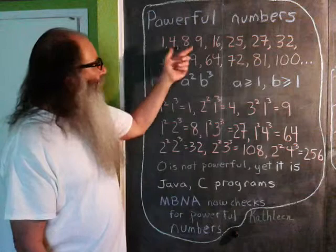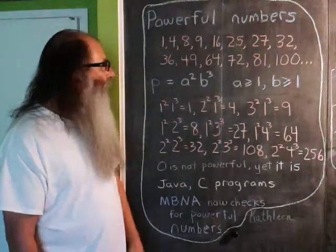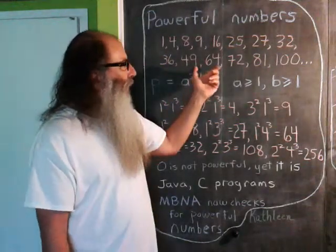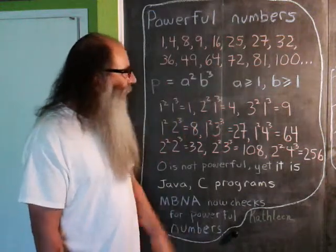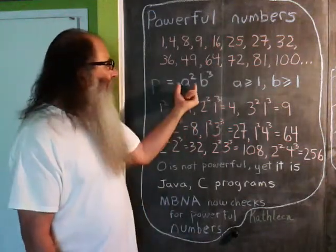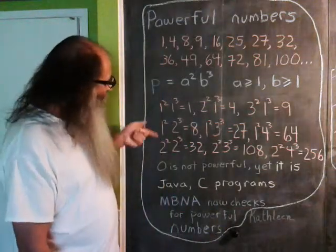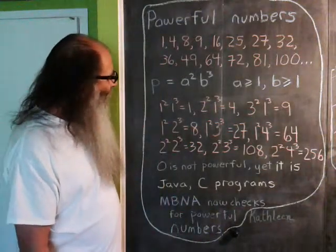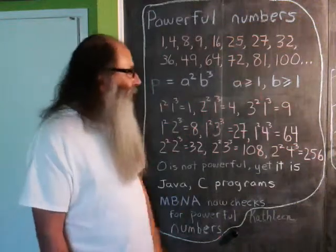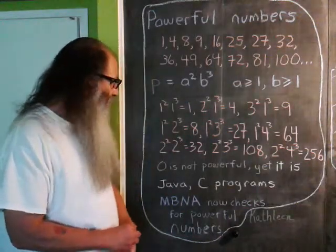Here are the first few powerful numbers. This sequence is generated by this formula right here. Basically, it's a square number times a cube number. I wrote down some notes here as to how this integer sequence is generated.